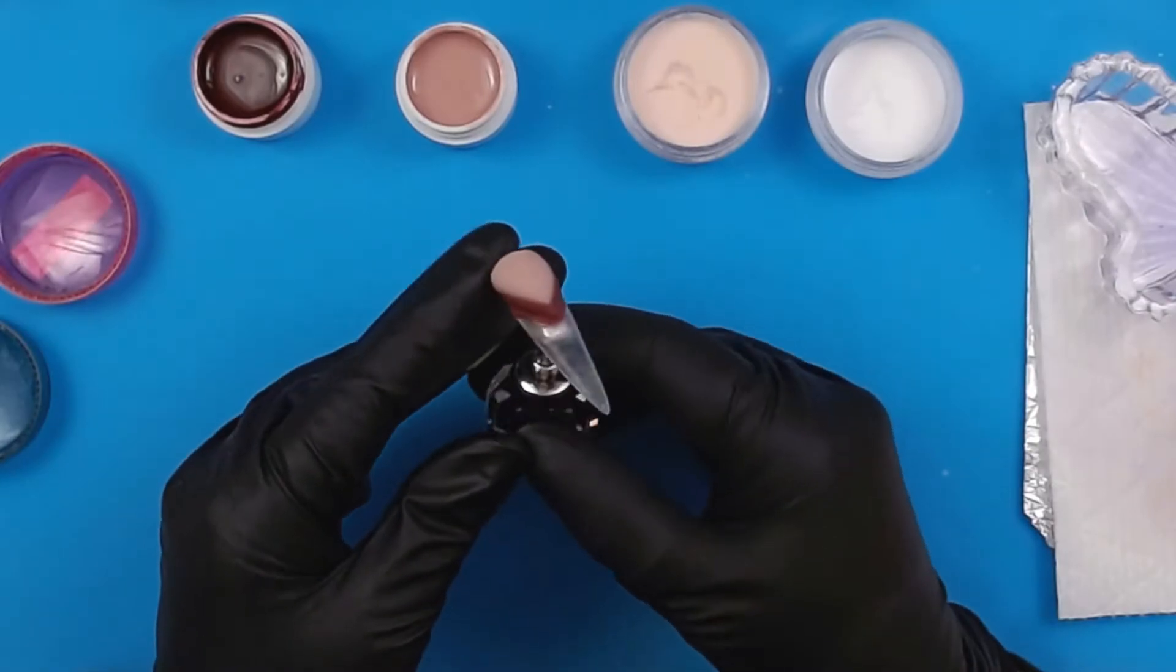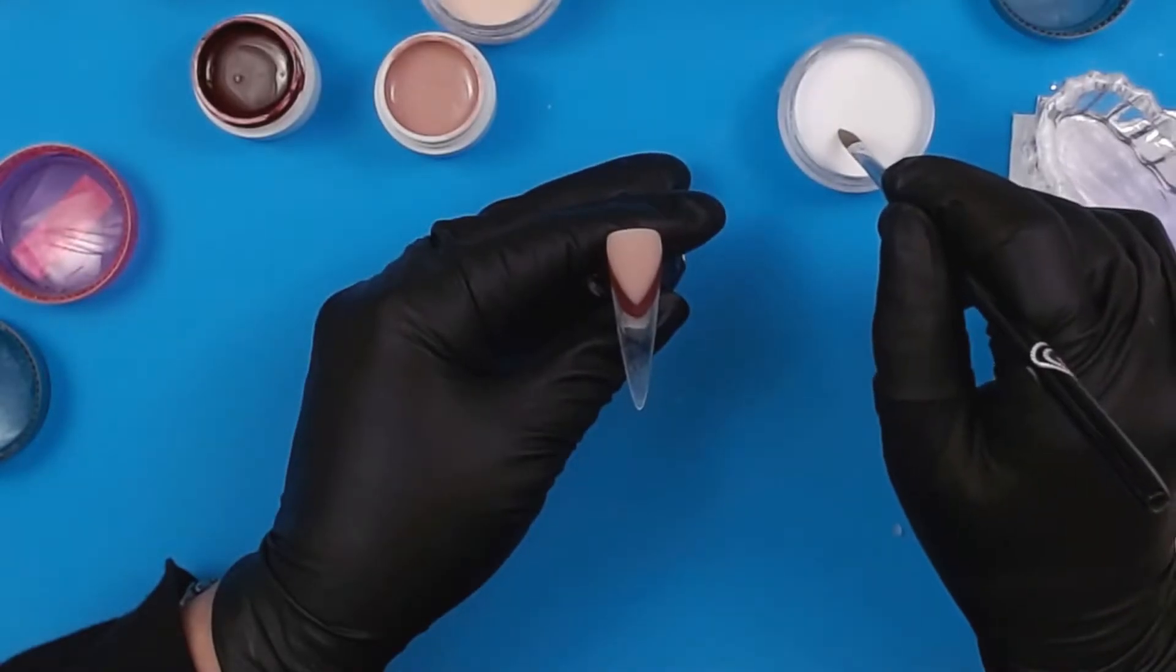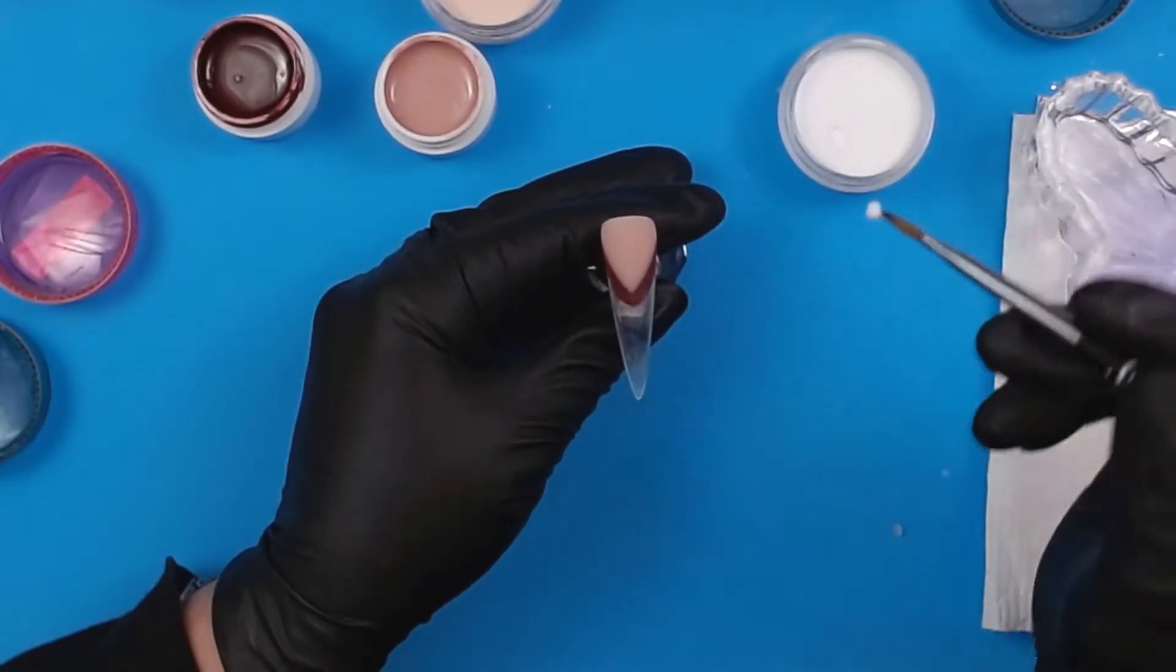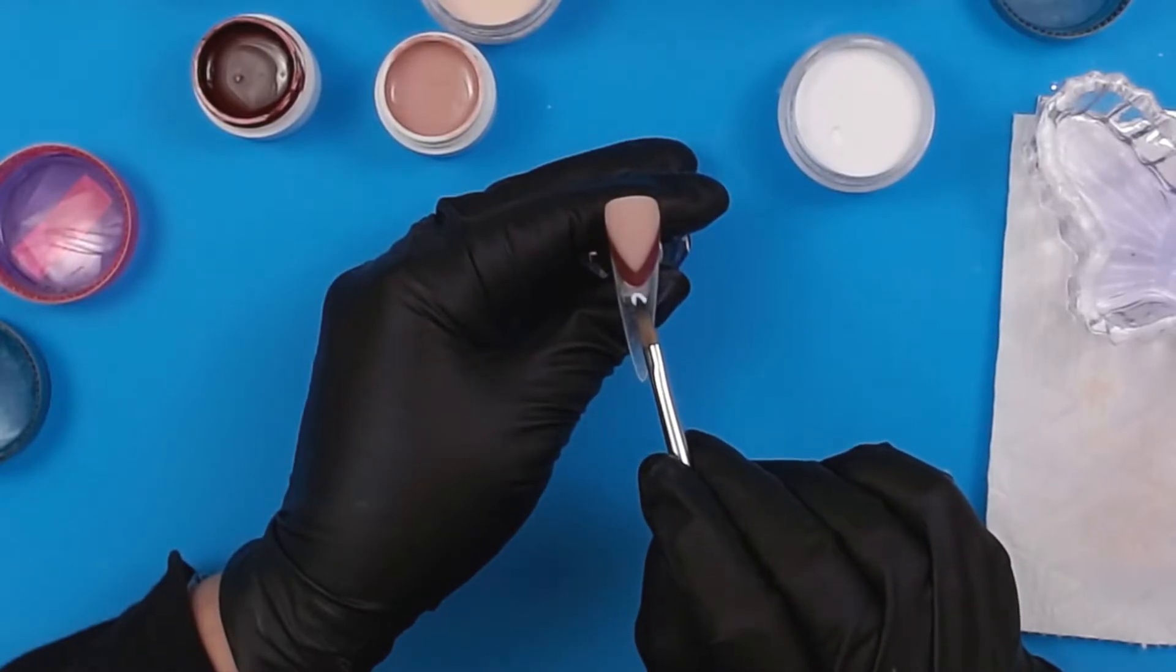As you can see, the edges are very crisp and I'm ready to build my 3D flowers using this awesome Mia Secret White. This is my absolute favorite because it's very smooth and I don't have any problems with it at all.